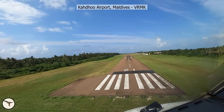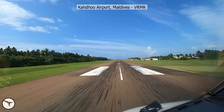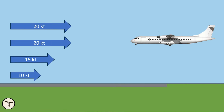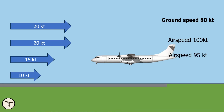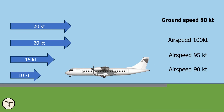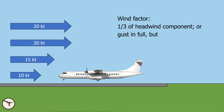Landing into a headwind is always an advantage — the ground speed is reduced, and with it, the landing distance. One thing to remember is that wind velocity often decreases when the aircraft is about to land. This is called wind gradient, and is caused by friction between the ground and the air. Because of the weight of the aircraft, it has inertia and cannot rapidly adjust to a reducing headwind. Therefore, we add a wind factor to the approach speed. The wind factor is the highest of one-third of the mean headwind component or the gust in full, but never more than 50 knots correction. The wind factor will compensate for the reduction in headwind before touchdown.